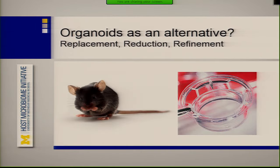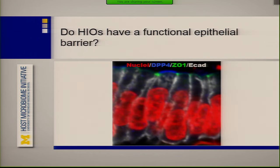In terms of animal welfare, could this be a replacement — somewhere between mice and using a transwell or other immortalized tissues? In particular, we can develop enteroids from a mouse, but these are human enteroids, so we can look at human cells interacting with a human pathogen. One of the first things Jason wanted to do was see if they actually had a functional epithelial barrier. If you stain for ZO-1, it looks like they have nice tight junctions on the apical surface of the epithelium — this is the epithelium of an organoid about a month to a month and a half old.